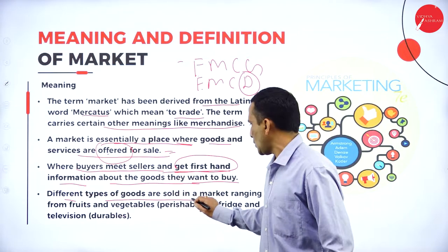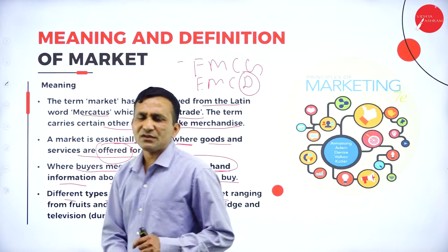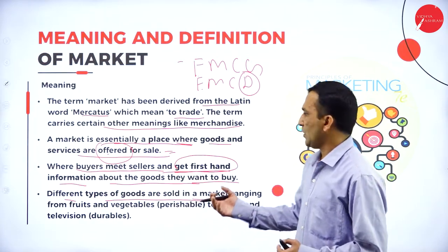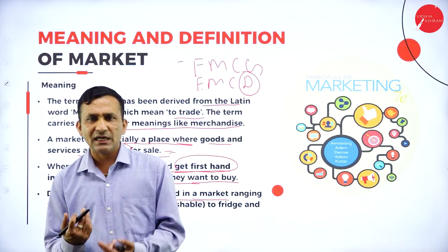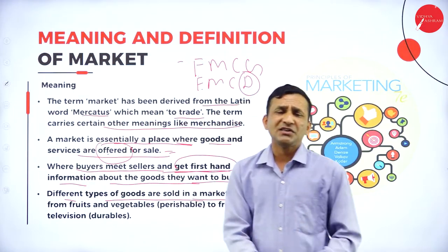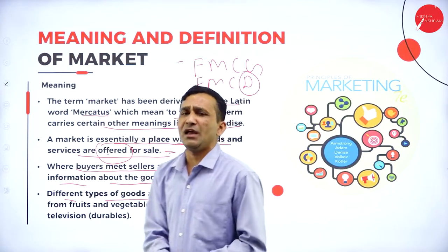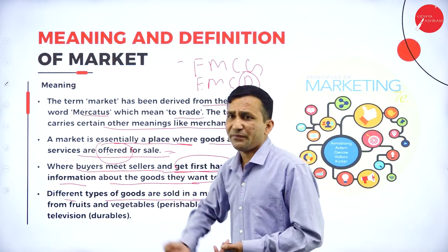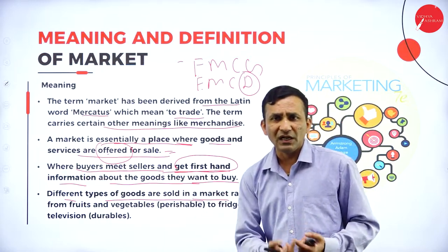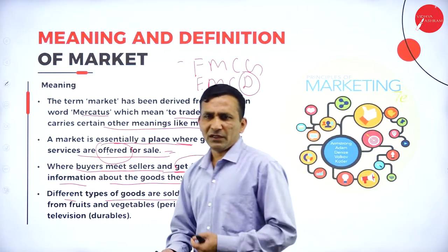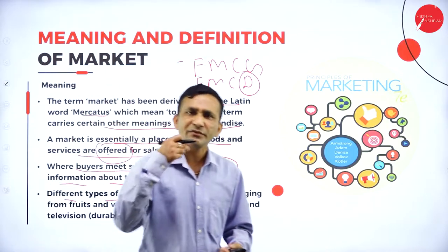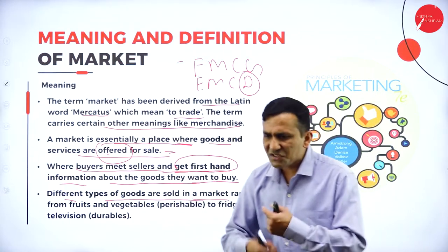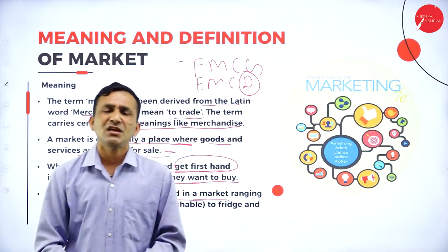Different types of products are sold or different services are offered by the seller to the buyer, based on customers' real requirements. We can market an idea, a physical product like FMCG, FMCD, or automobiles. Not only physical products — service can also be offered, and even ideas, persons, and organizations can be marketed.